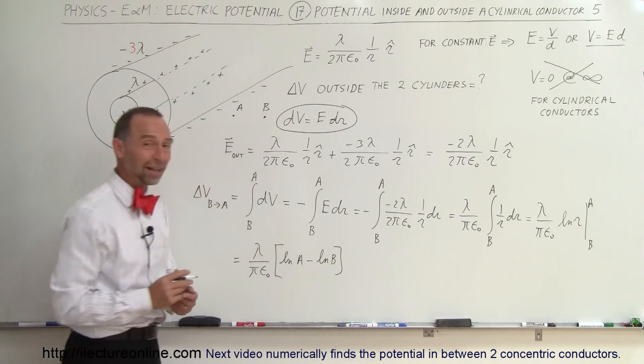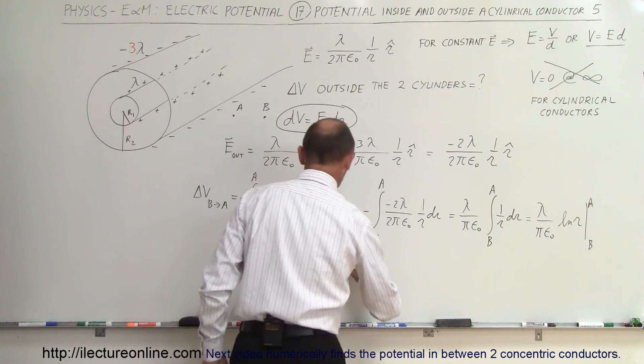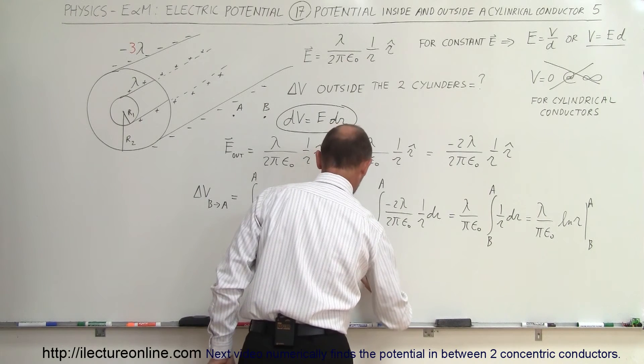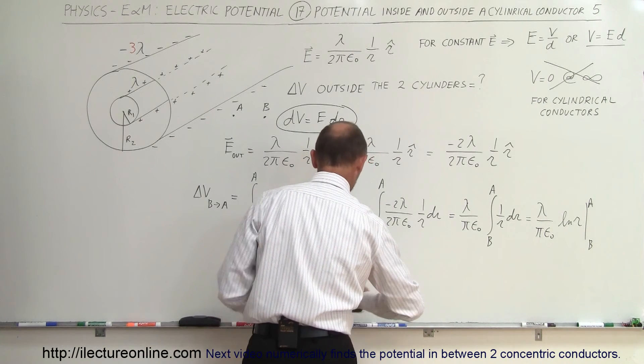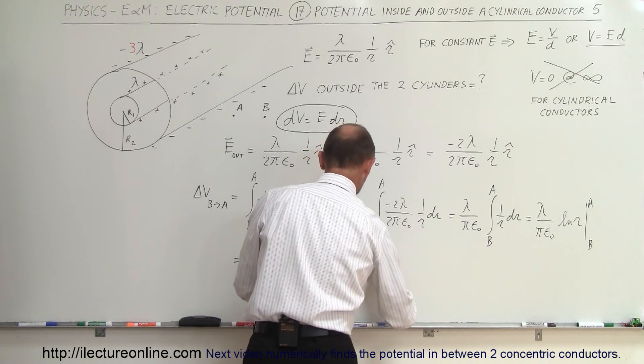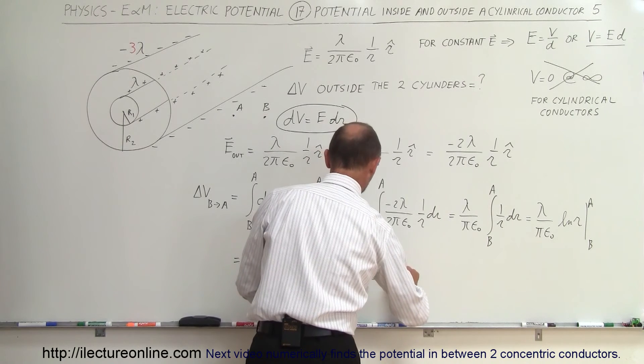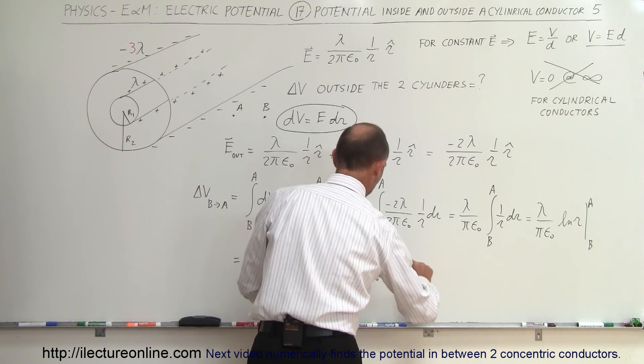And finally, we can go ahead and simplify that knowing the rules of logarithms. So this is equal to λ divided by... Oops. Not 2π because the 2 cancelled out. So we have πε₀ times the natural log of A divided by B.